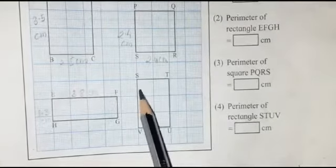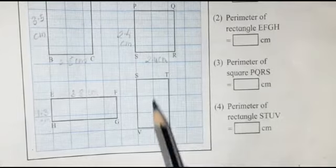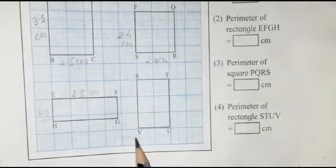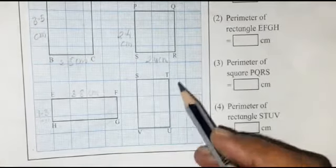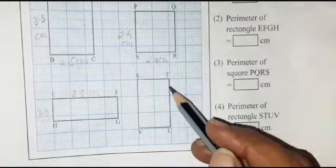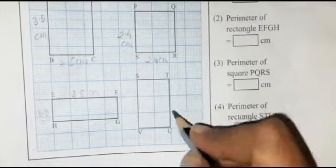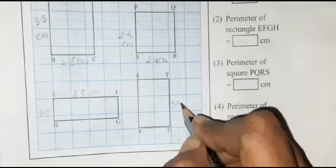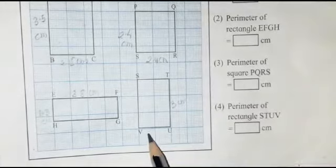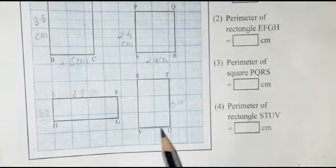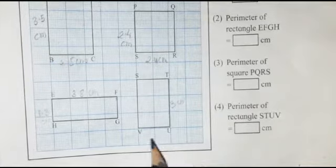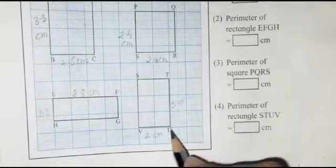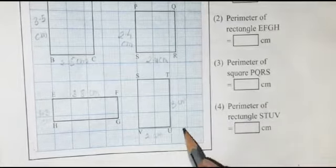Now see the fourth figure STUV. This one is 1 centimeter, this one is 1 centimeter, and 1, 2, 3 — so here is 3 centimeter. The breadth is 1, 2 — so here is 2 centimeter.